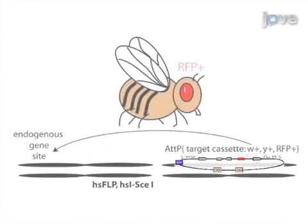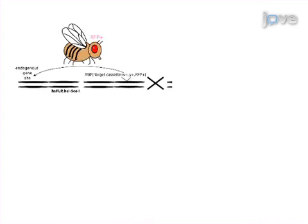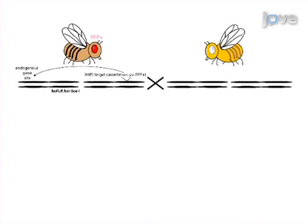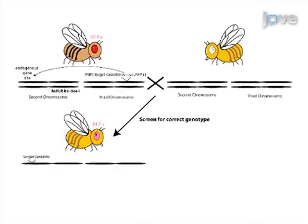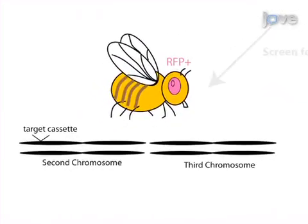Ultimately, these procedures will engineer a targeting vector for ends-out homologous recombination to generate unequivocal null mutations or tagging endogenous proteins in Drosophila through the usage of recombineering-based techniques. Additionally, the written manuscript also includes a protocol for how to mobilize these cassettes in vivo to generate a knockout or a tagged gene via knock-in.